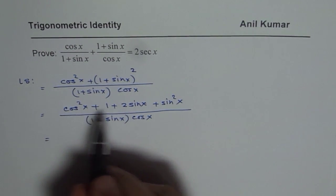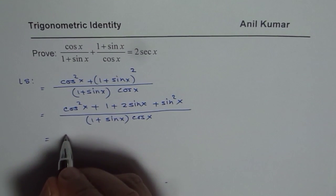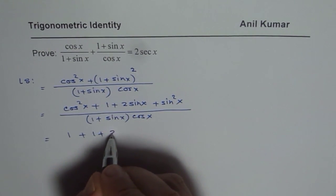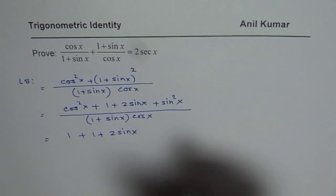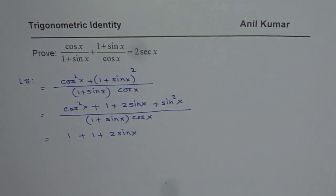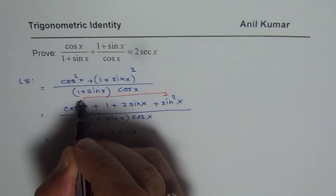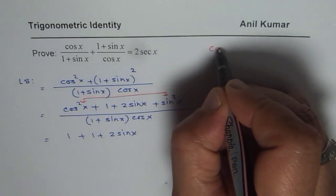Here we have cos squared x plus sin squared x which is 1. So we could write 1 for this, plus we already have 1 plus 2 sin x. What we did was combine these two terms using the Pythagorean identity.